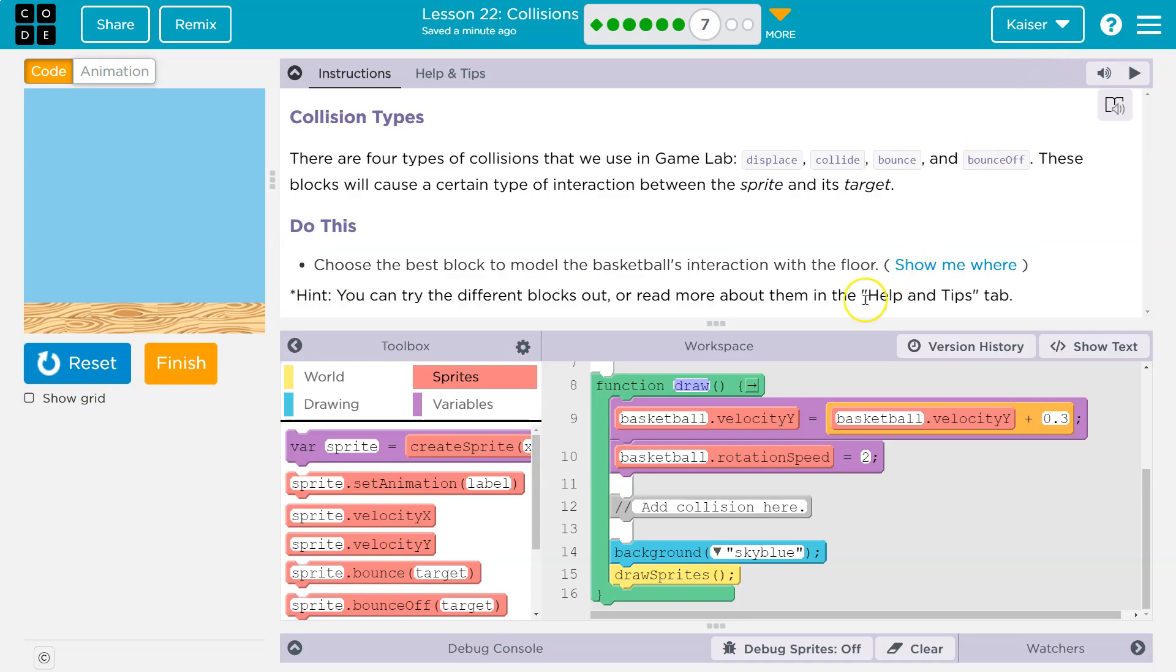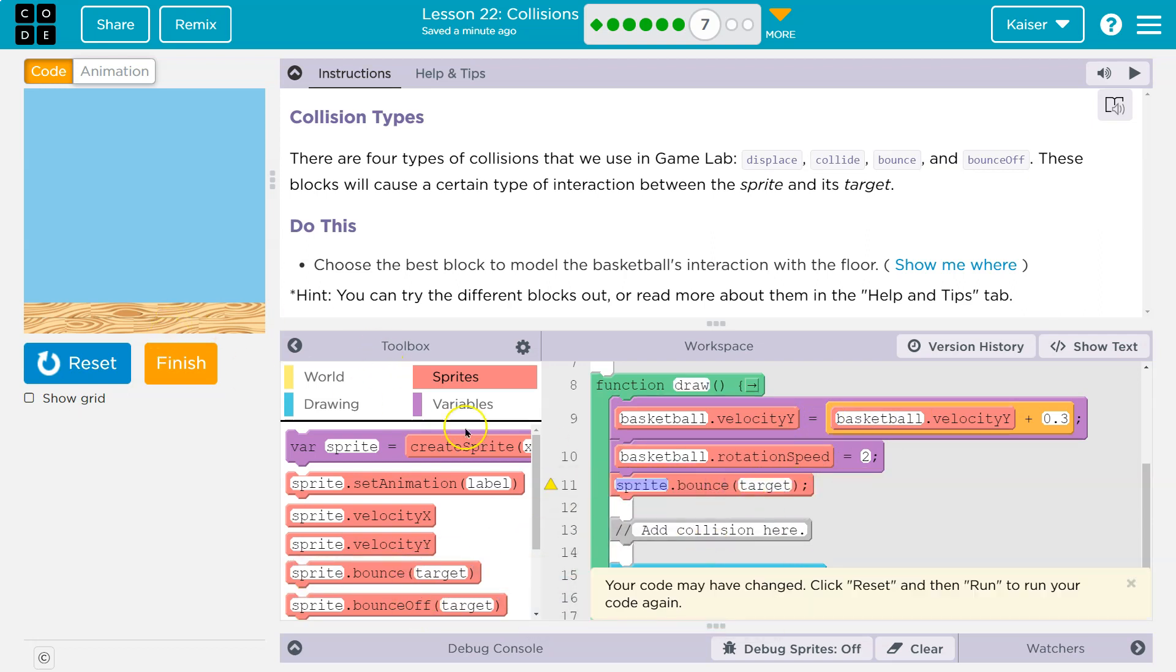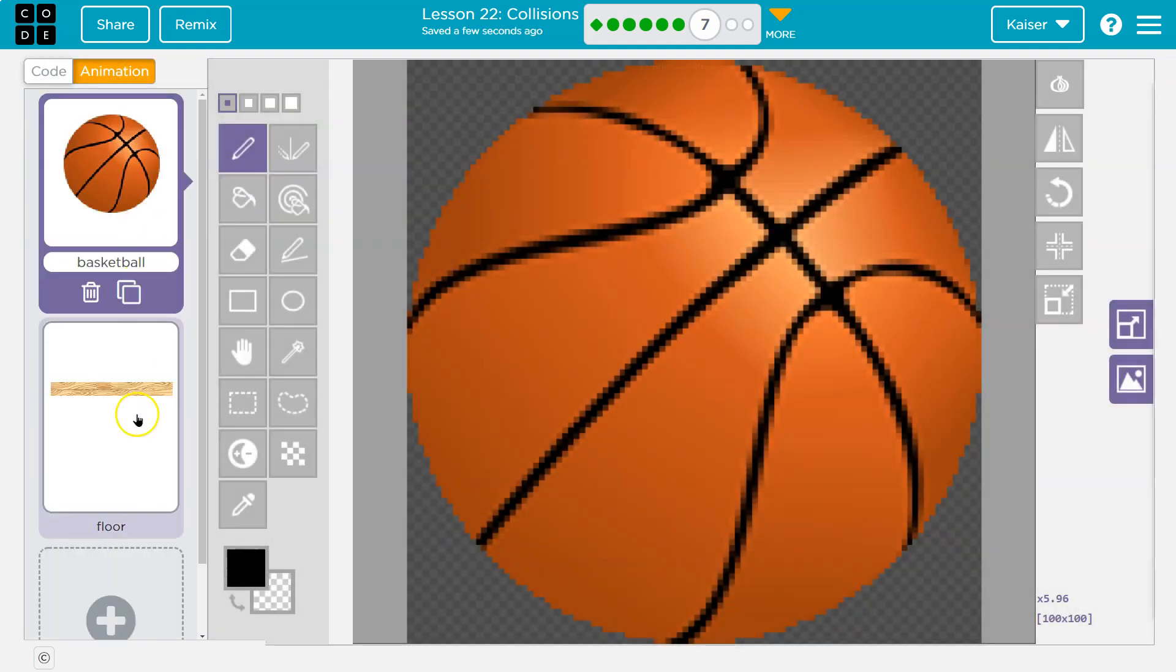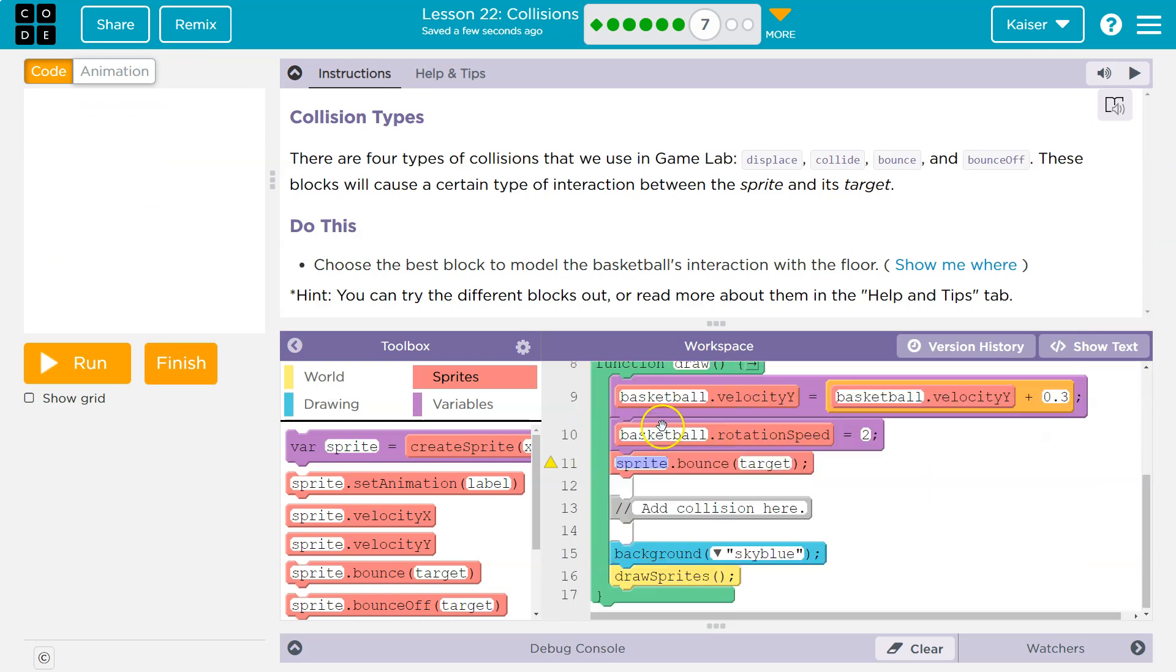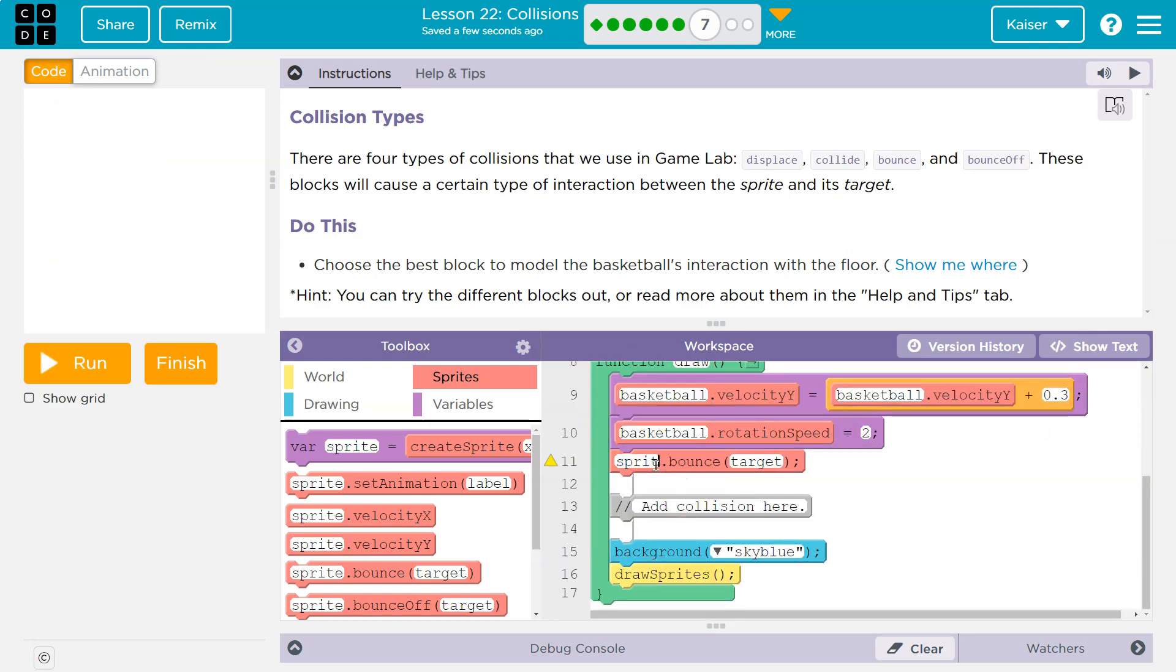I'm going to just drop in bounce for now. What's nice about this is we can look at the animation—the floor is a sprite and so is the basketball. I'm going to say I want the basketball to bounce on the floor.